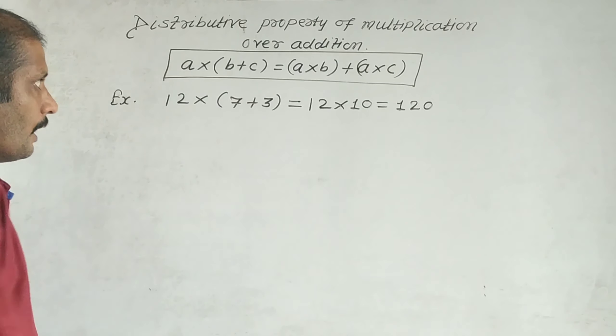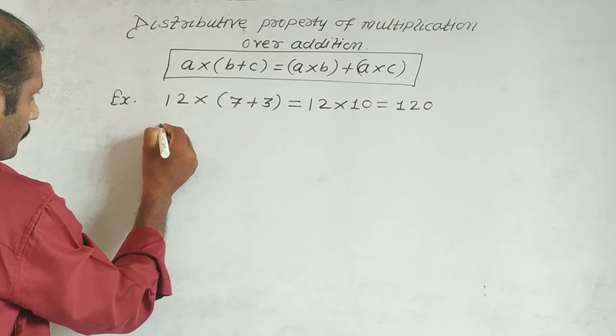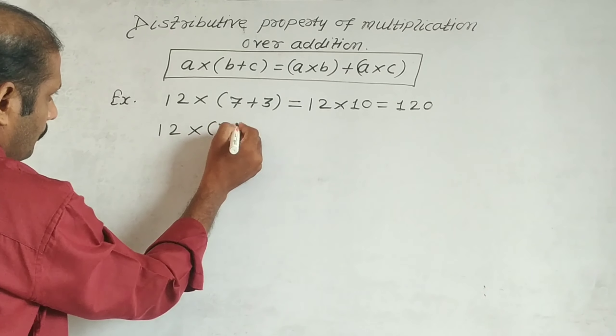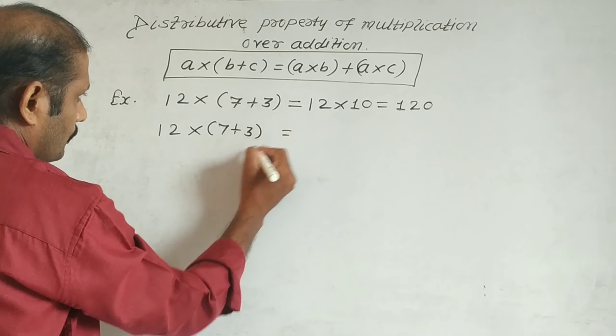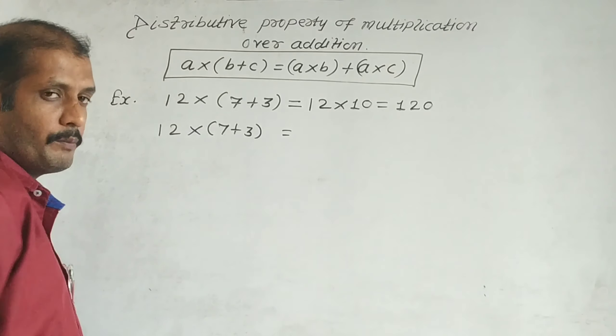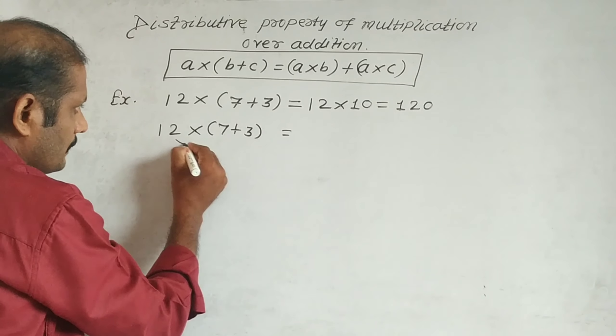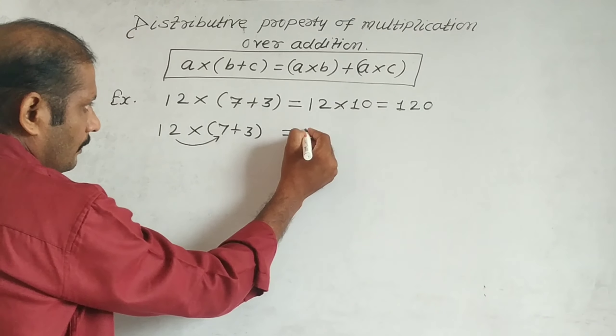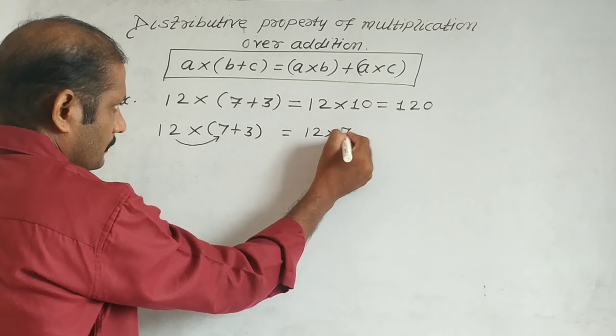Now we'll use the property. 12 × (7 + 3) equals... Now we multiply the bracket's outside number with each number inside the bracket according to this property. So first we'll multiply 12 by 7, we get 12 × 7.